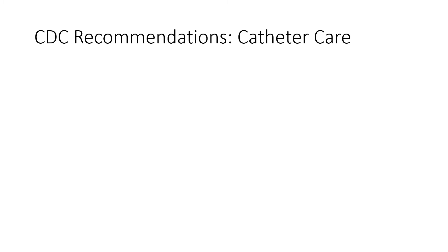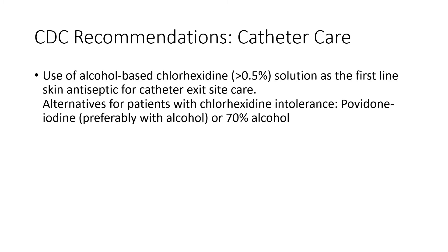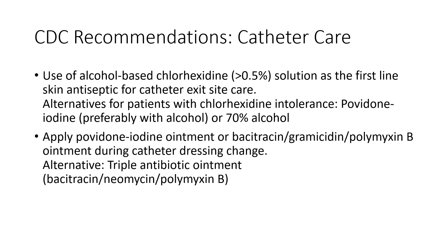Based on these and other studies, the CDC recommends alcohol-based chlorhexidine solution as the first-line skin antiseptic for catheter exit site care. If a patient has a true allergic reaction, povidone iodine or isopropyl alcohol can be used as alternatives. There is also data showing that application of either povidone iodine ointment or an antibiotic ointment at the catheter exit site can reduce the risk of infection.